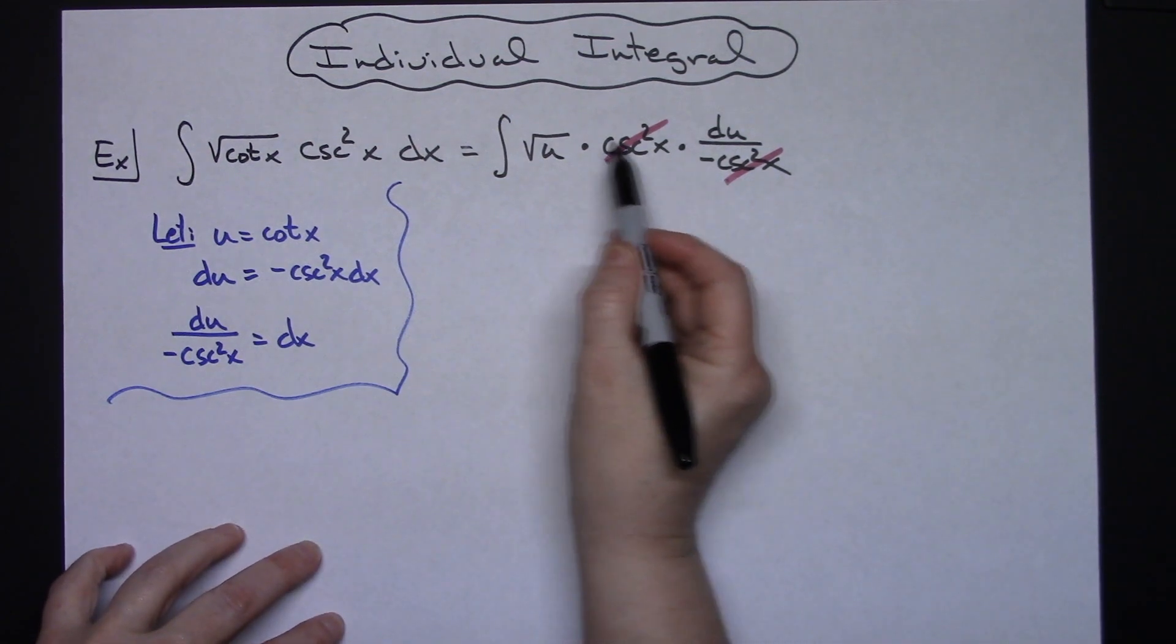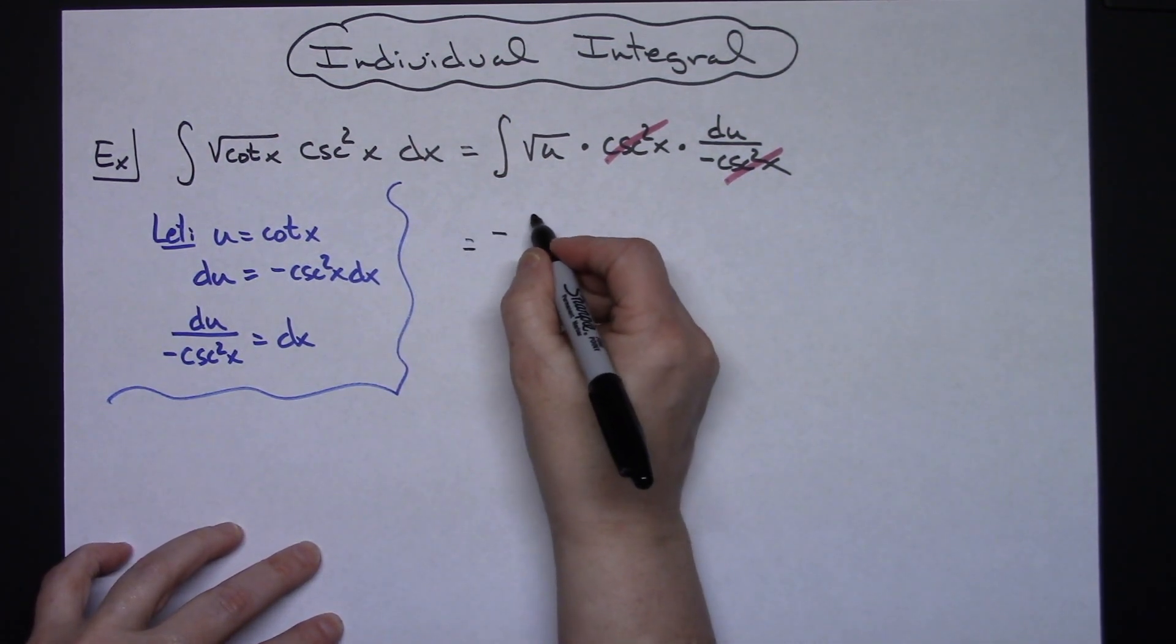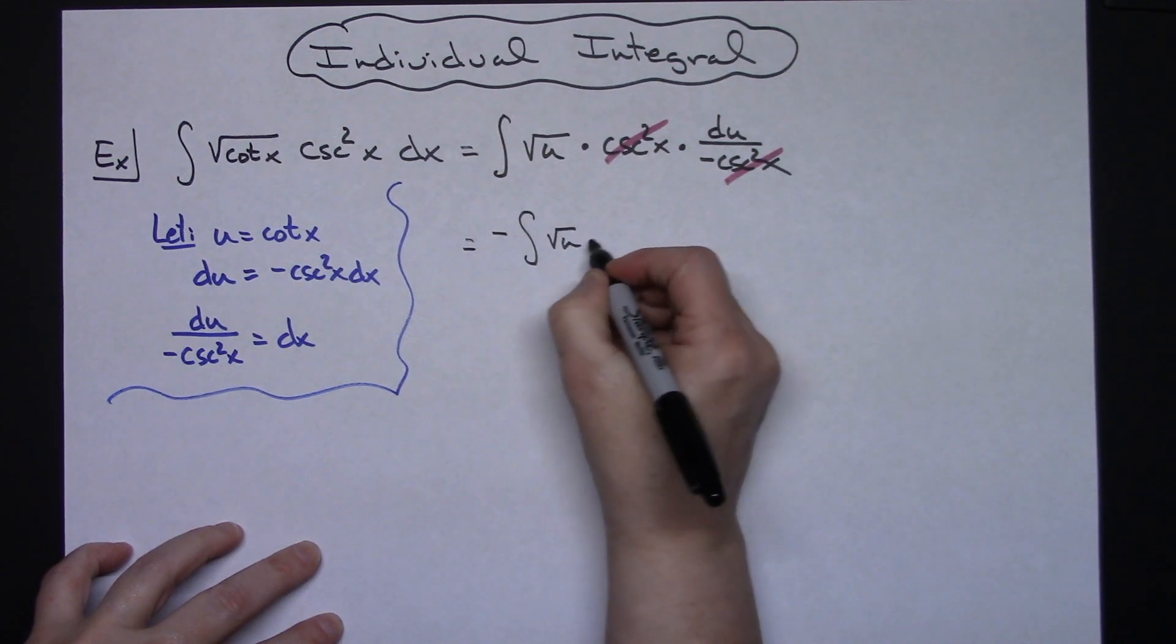I'm going to then be able to pull that negative out in front. So I'll have negative the integral of the square root of u du.